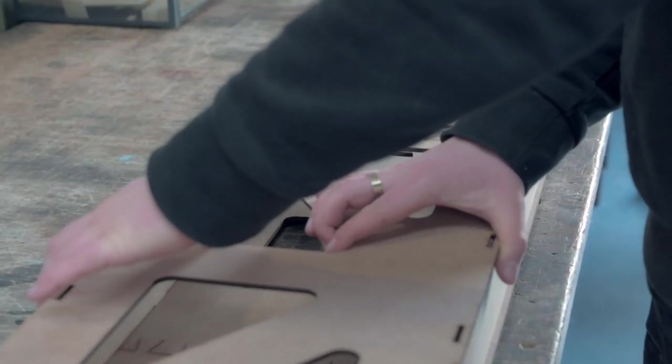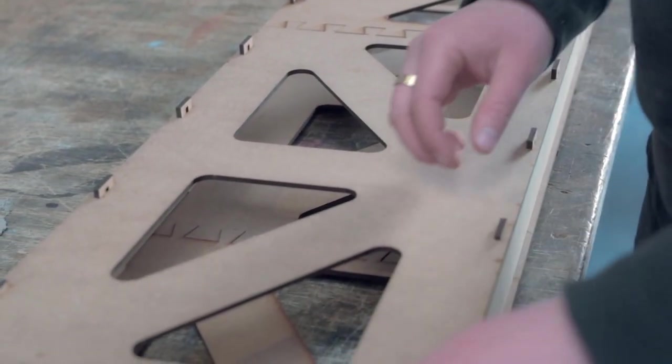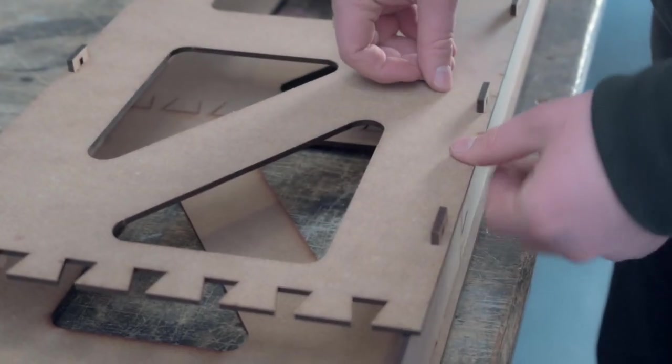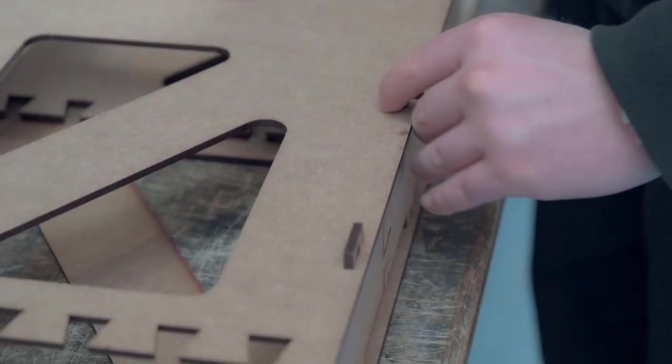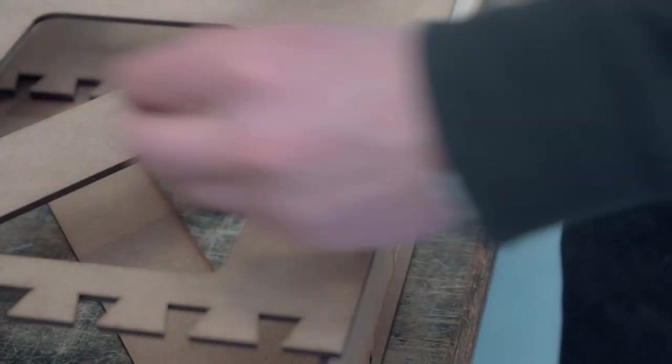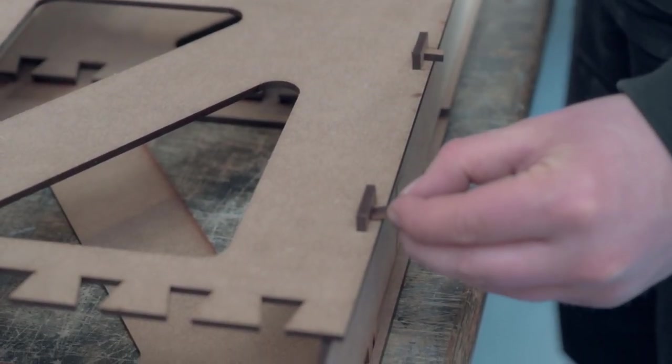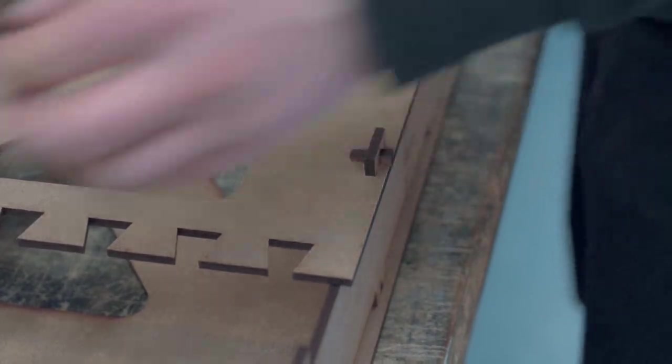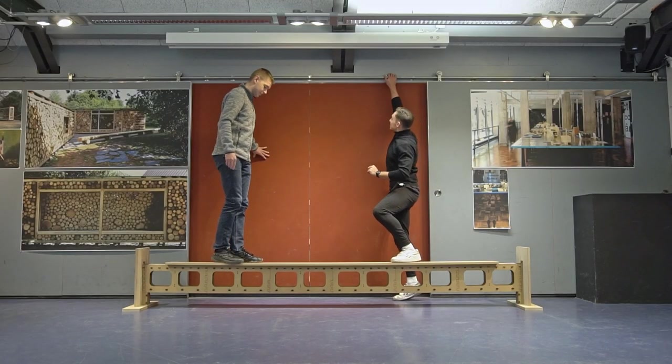In the following example, you can see nicely how a model is built, in this case a laser-cut model, to check the statics of a beam. The model is actually built 1 to 1, like the real object, with the connectors and the transfers.